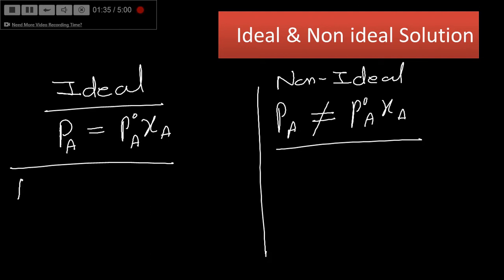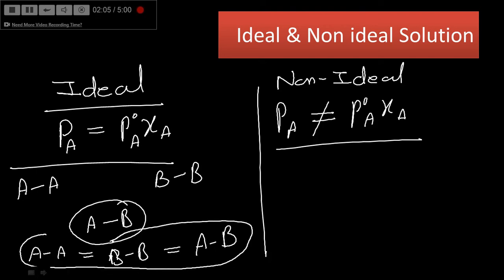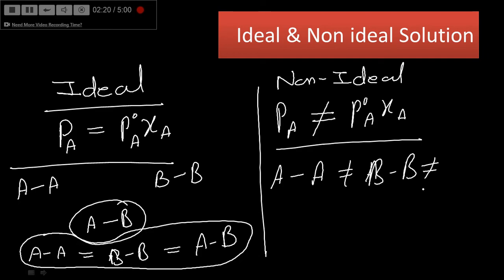In an ideal solution, if there is interaction between molecules of A represented by A-A, and interaction between molecules of B represented by B-B, when we mix both components we get a new interaction A-B. If A-A equals B-B and equals A-B — meaning the interaction between particles of A is approximately equal to the interaction between particles of B, which is equal to the interaction between A and B — it is called an ideal solution. If not, it is called a non-ideal solution.